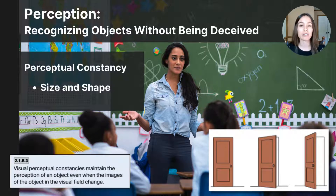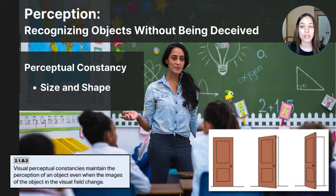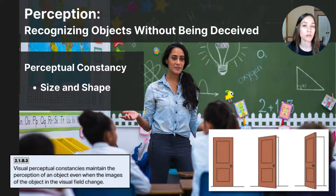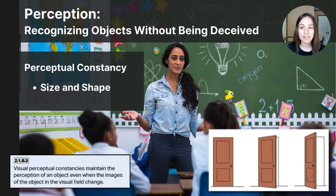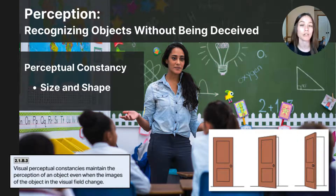Objects in your environment will not only change size depending on their distance, but they'll also change shape depending on their angle. Consider how a door, as it opens, changes from a rectangle to what appears to be a trapezoid. But because your brain knows what doors are like and how they work, you are not fooled by the shifting angles — you are still able to interpret the door's shape as a rectangle regardless of the changing visual input. Perceptual constancies like shape and size constancy help us understand that our brains construct stable perceptions even when sensory information changes.